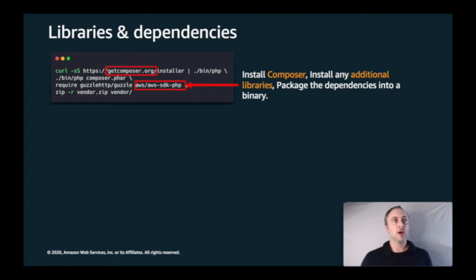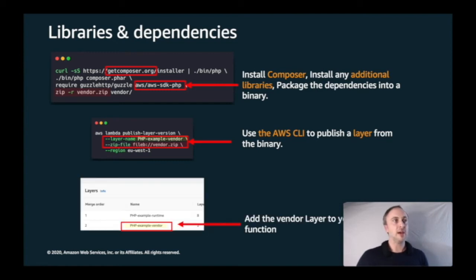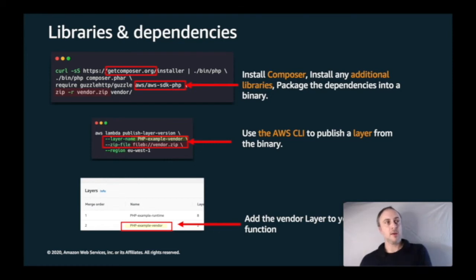I can install Composer and use it to install dependencies — for example, the AWS SDK for PHP — then zip that up into vendor.zip and use the CLI to publish it to a Layer. Here is a screenshot from the Lambda console showing two layers on my Lambda function: first the custom runtime, and second the vendor layer holding all my libraries and dependencies. This way I can separately manage my runtime and library dependencies and just add those two layers to each Lambda function.